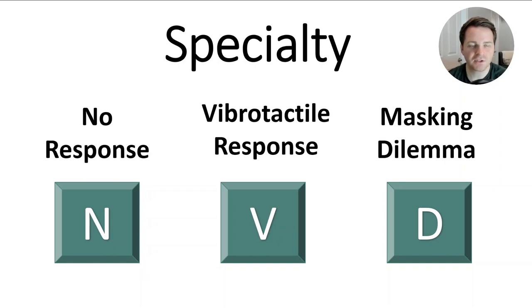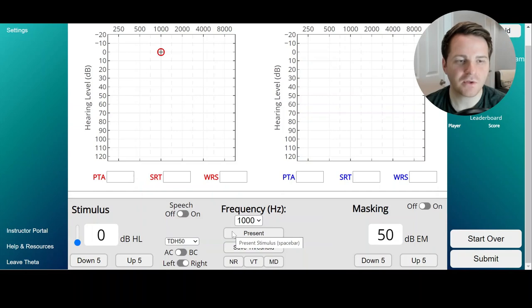There are some specialty ways to save thresholds. You can click N for no response, V for vibrotactile response, or D to mark a masking dilemma. You can hover your mouse over any of the buttons on the virtual audiometer and the associated hotkey will show up in a little text box.